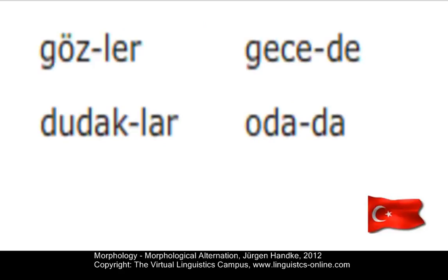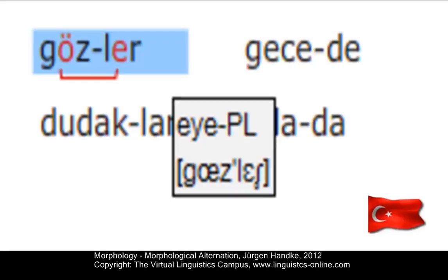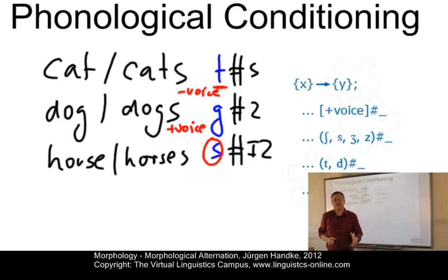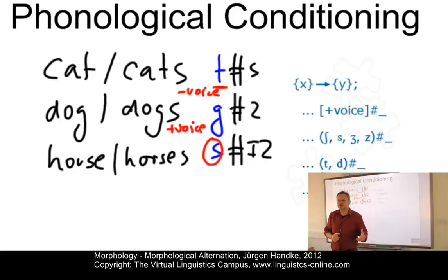In Turkish we have a very similar situation. Again the choice depends on the type of stem. We have 'gözler', which has a front vowel and the suffix '-ler', and 'dudaklar', which has a back vowel and the suffix '-lar'. This phenomenon seen in Hungarian and Turkish is one where the vowel of an allomorph has to be harmonized with a stem vowel, and this phenomenon has become known as vowel harmony.